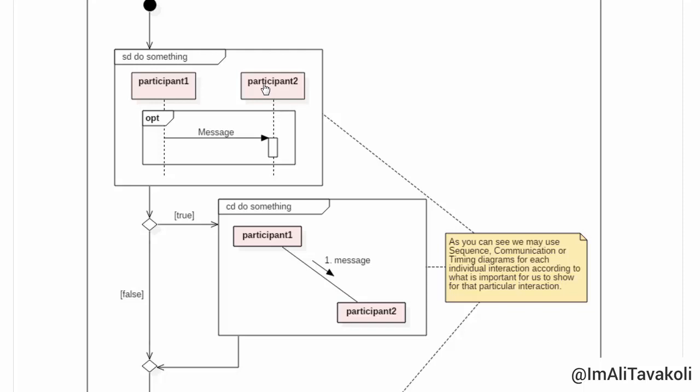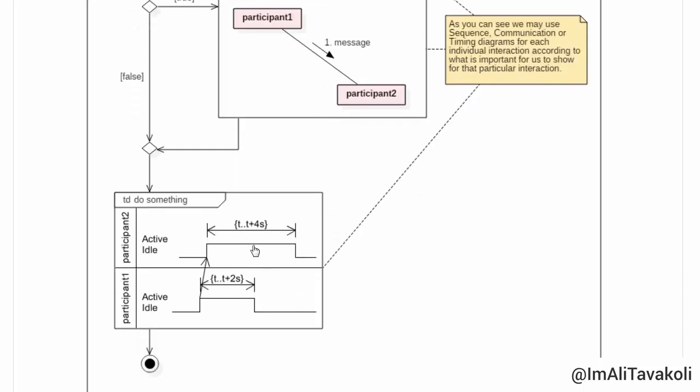And as we have also mentioned, we will use Sequence or Communication or Timing Diagram for each individual Interaction, according to what is important for us to show for that particular Interaction. In our example here, because in this Interaction, the Sequence of Messages was so much important for me, so I have shown this Interaction with this Sequence Diagram. Here, because the Organization of the Participants was so much important for me, so I have shown it with the Communication Diagram. And here, because I wanted to demonstrate the timing of actions and different states, so I have drawn it with the Timing Diagram.